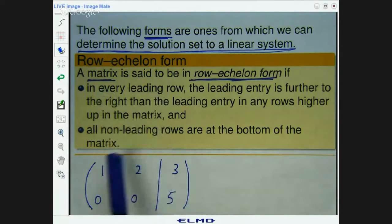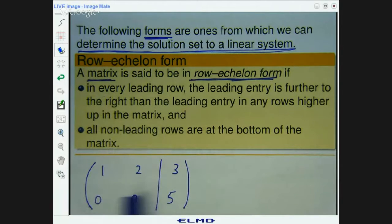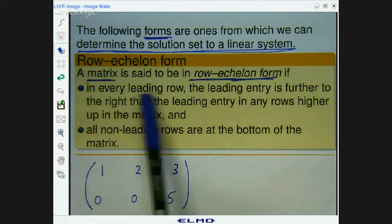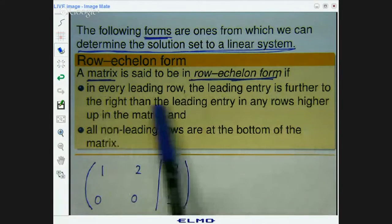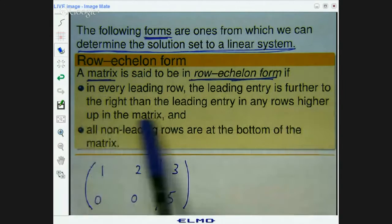So first of all, there's no zero rows anywhere, so we don't need to worry about this. So all the rows are leading in this matrix. In every leading row, the leading entry is further to the right than the leading entry in any rows higher up the matrix.